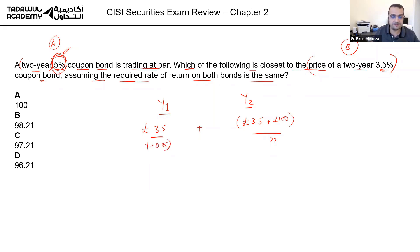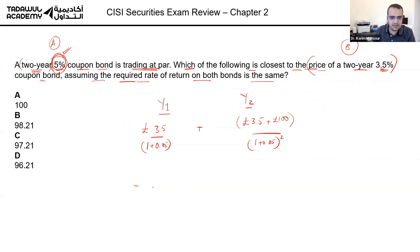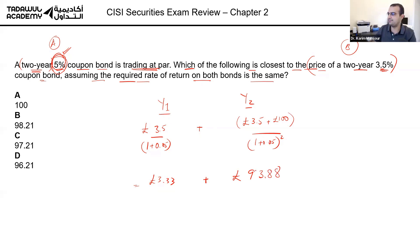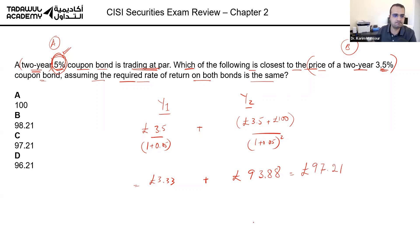So the calculation is: 3.5 divided by 1.05 in the first year, which is 3.33; plus in the second year 103.5 divided by 1.05 squared, which is 93.88. Adding these together gives us 97.21. So the answer is C.